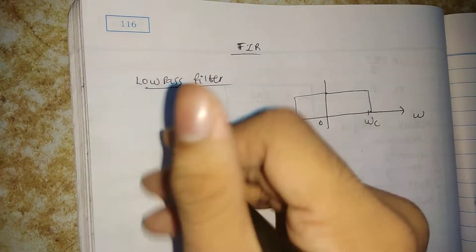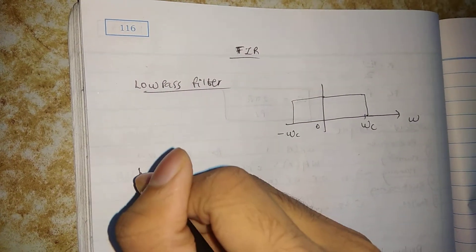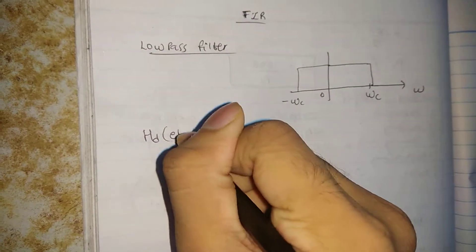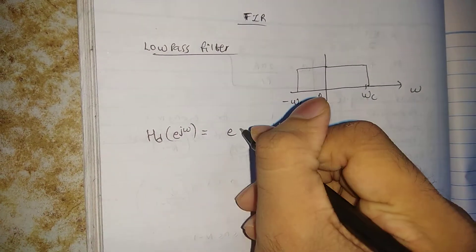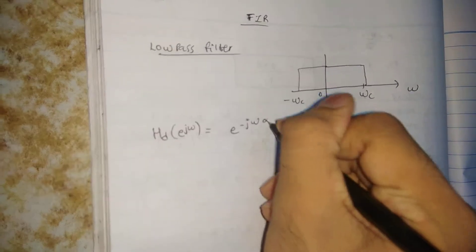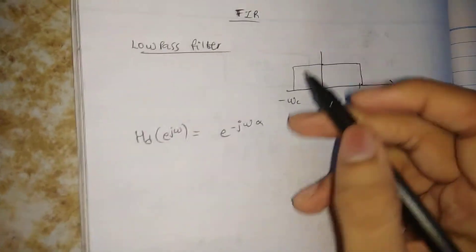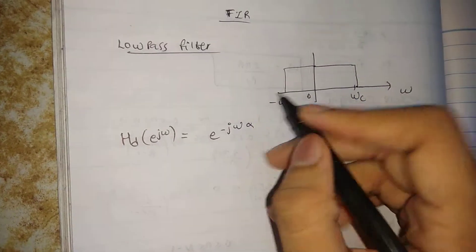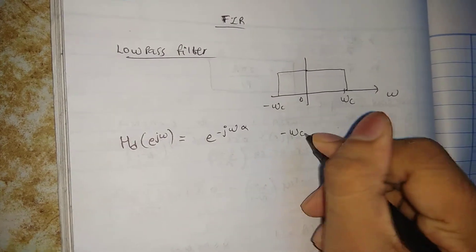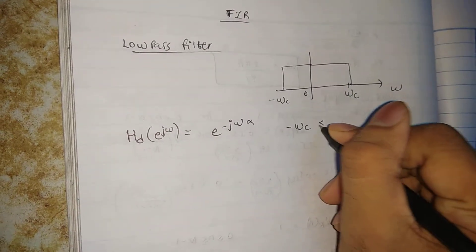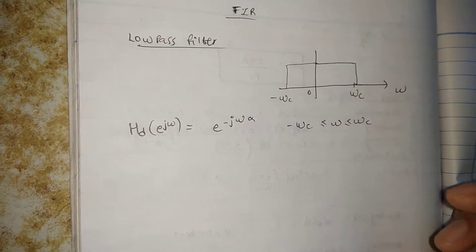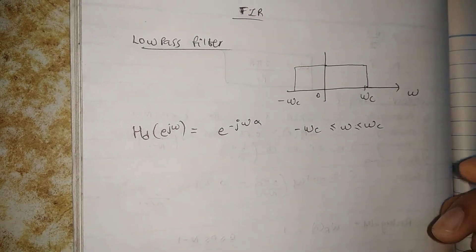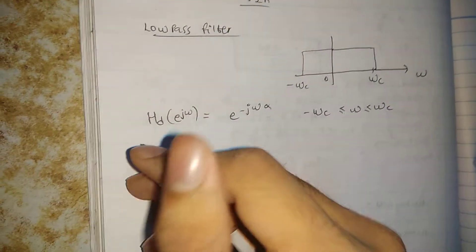The low pass equation is: HD of e raised to j omega equals e raised to minus j omega alpha. The range is from minus omega C less than or equal to omega, less than or equal to omega C. This is the range for the low pass filter.